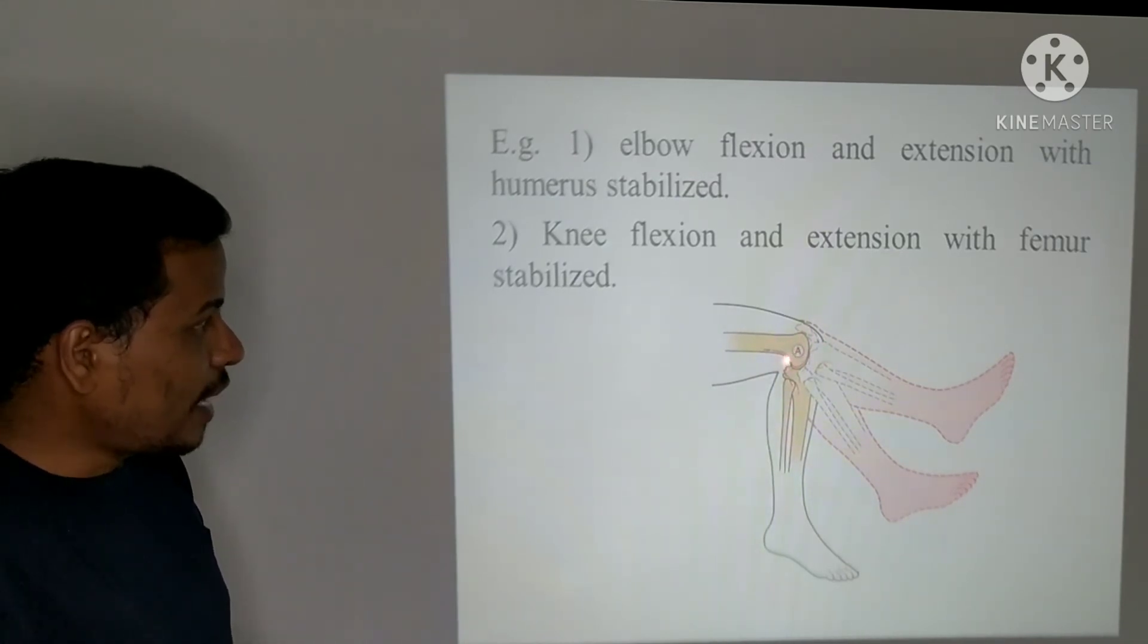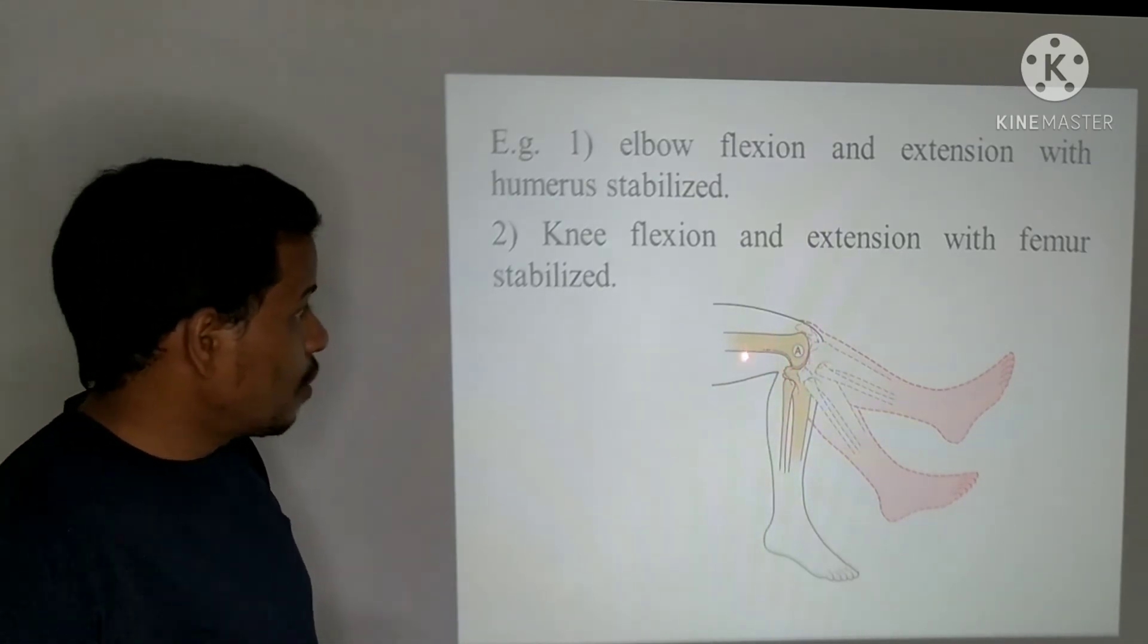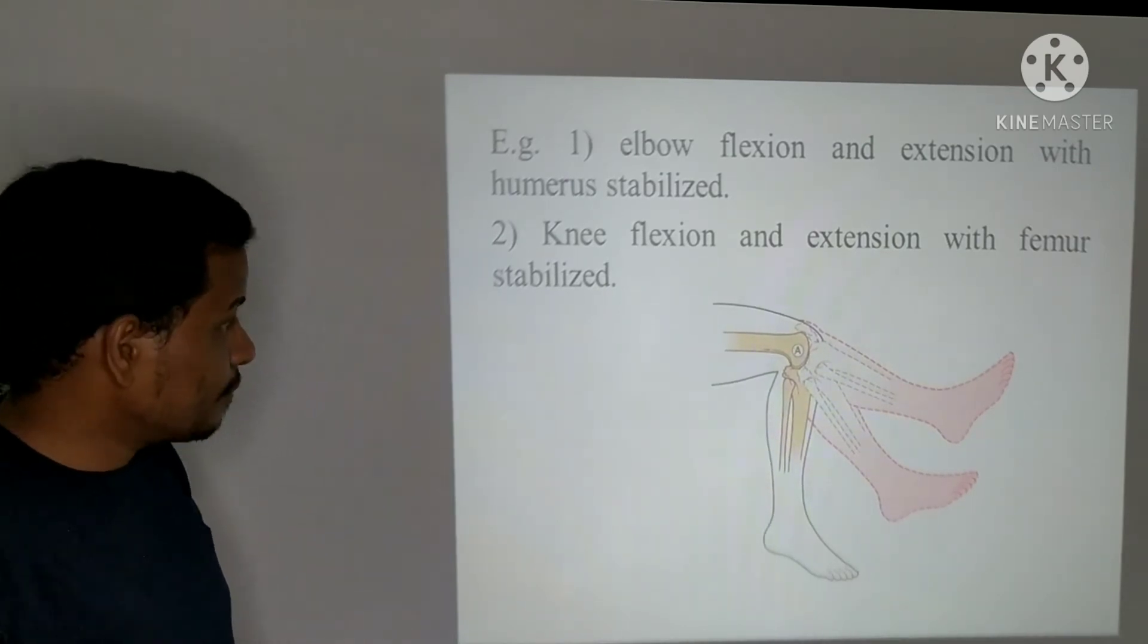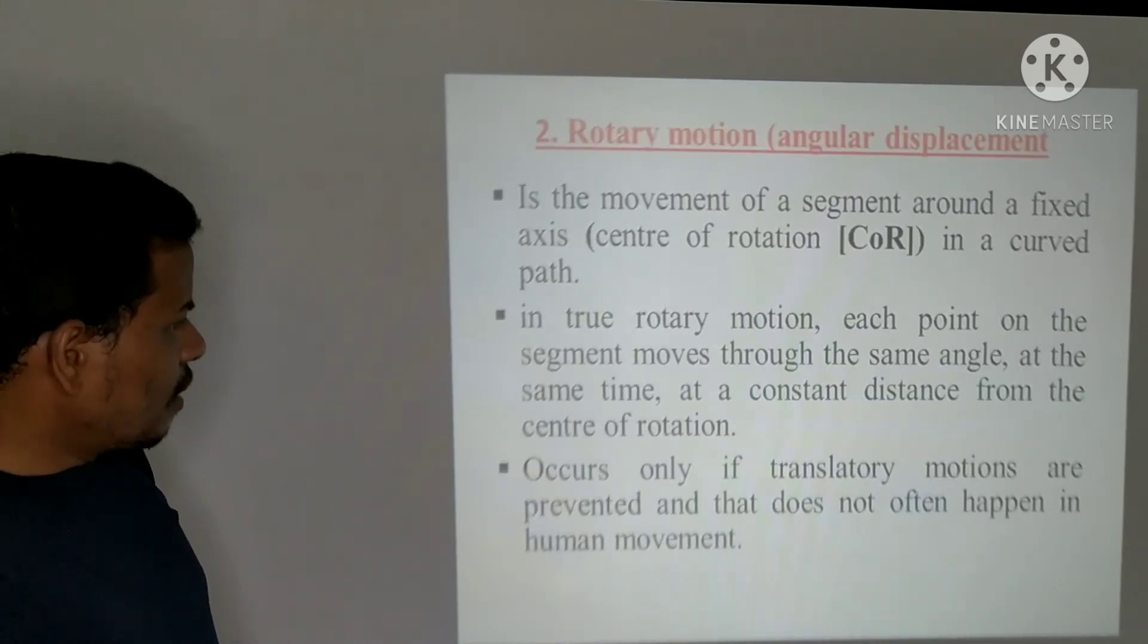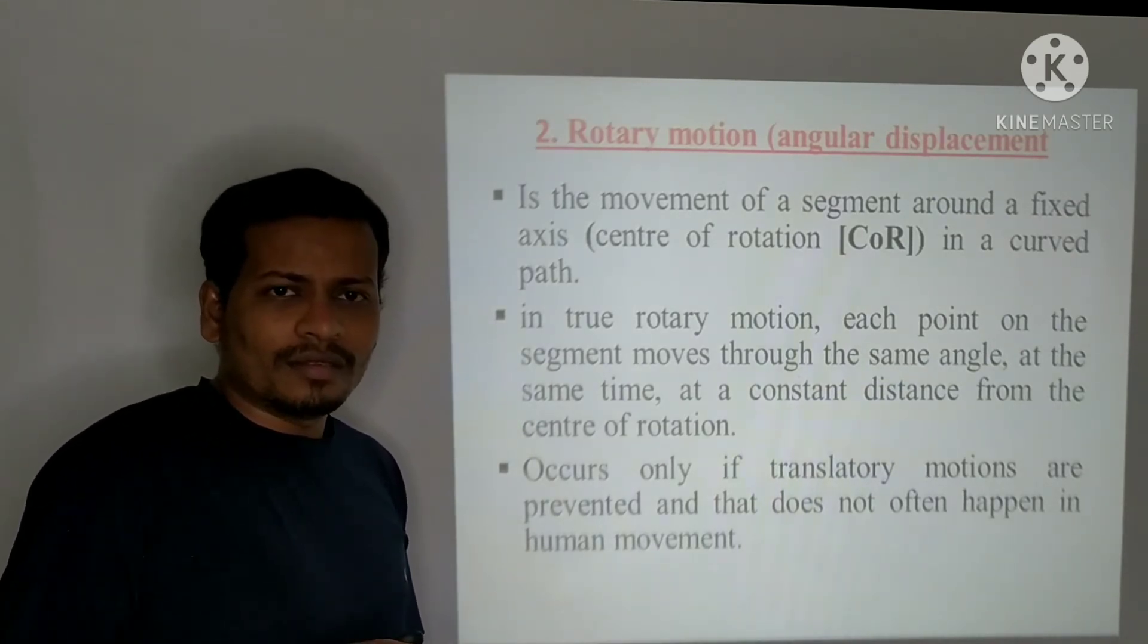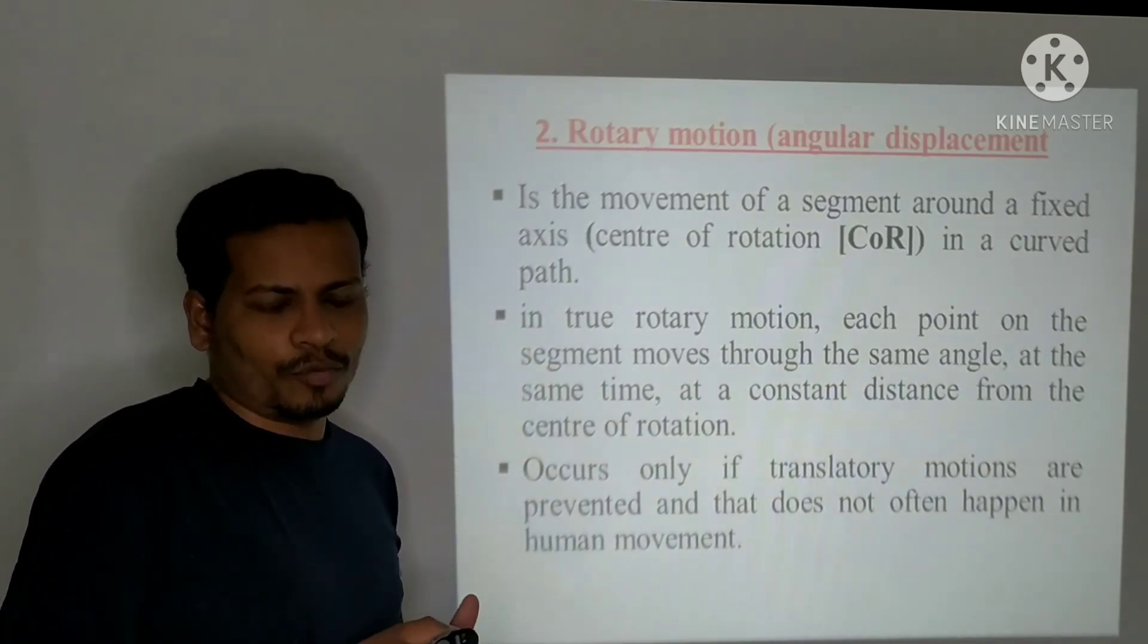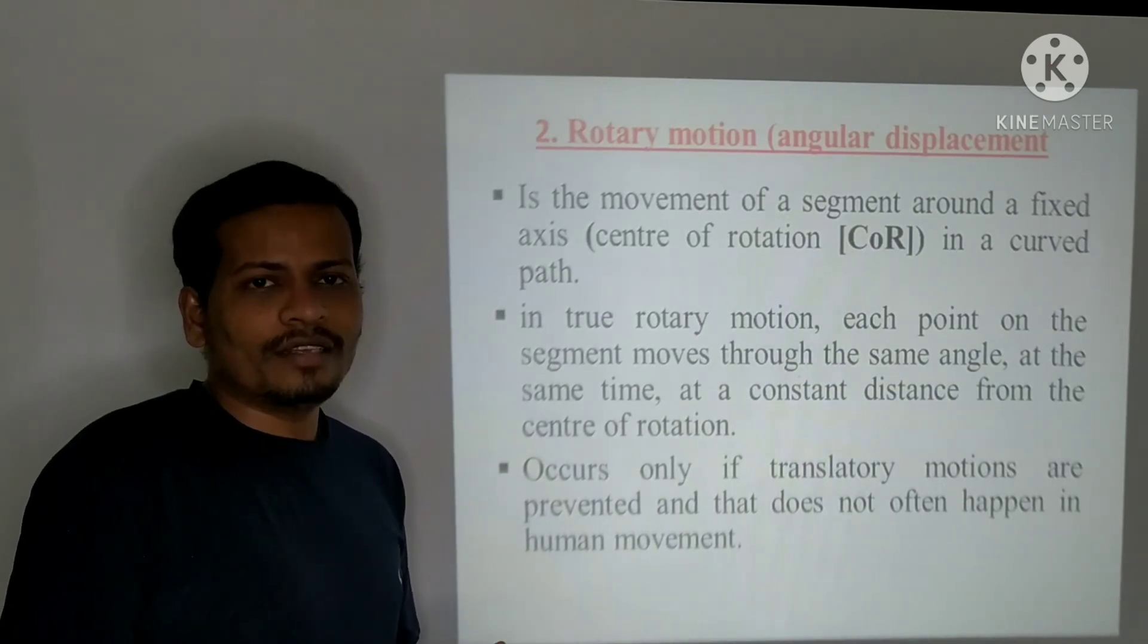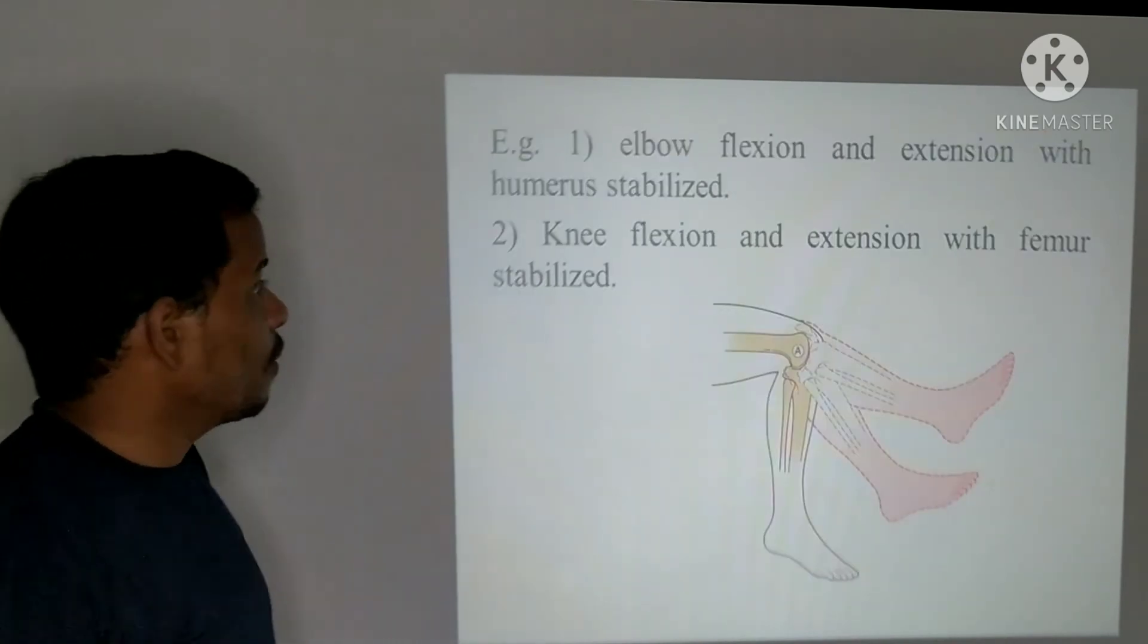For a true rotatory motion to occur, we have to minimize the translatory motion. If we minimize the translatory motions, then only a true rotatory motion can occur.